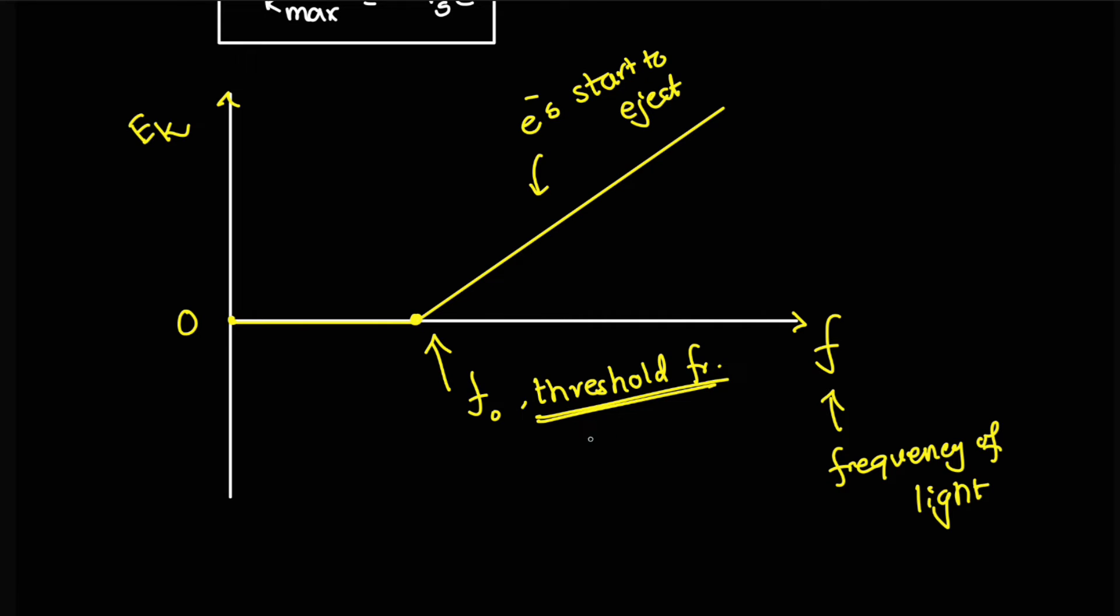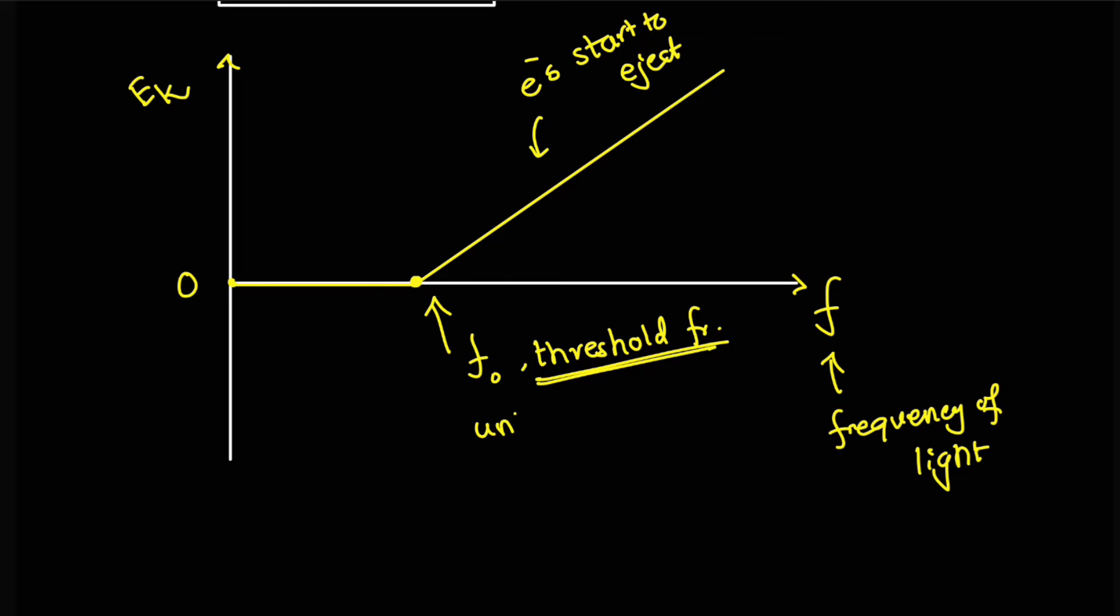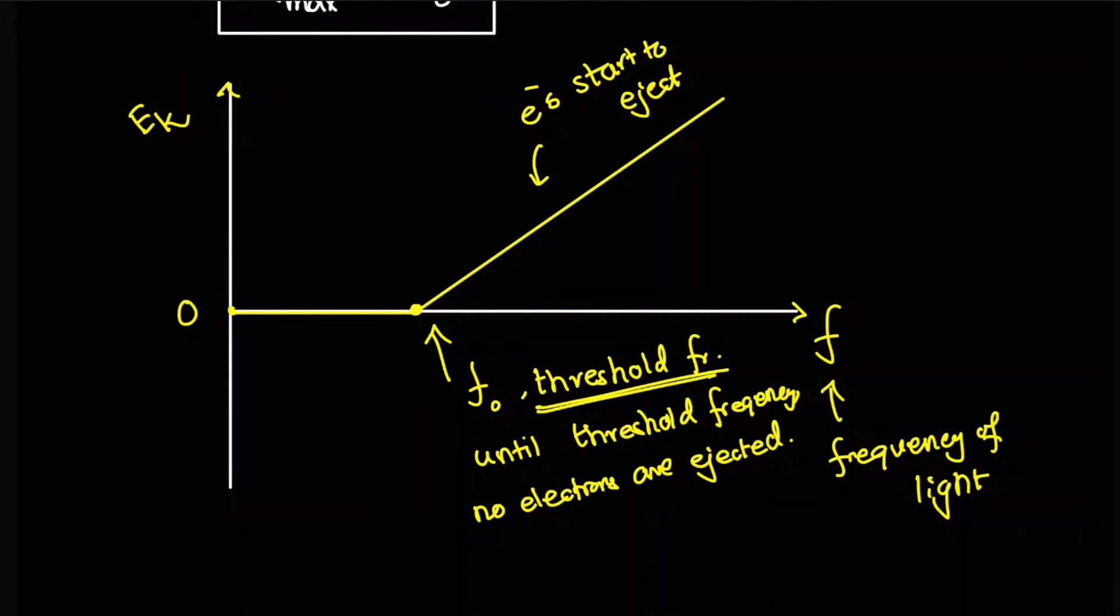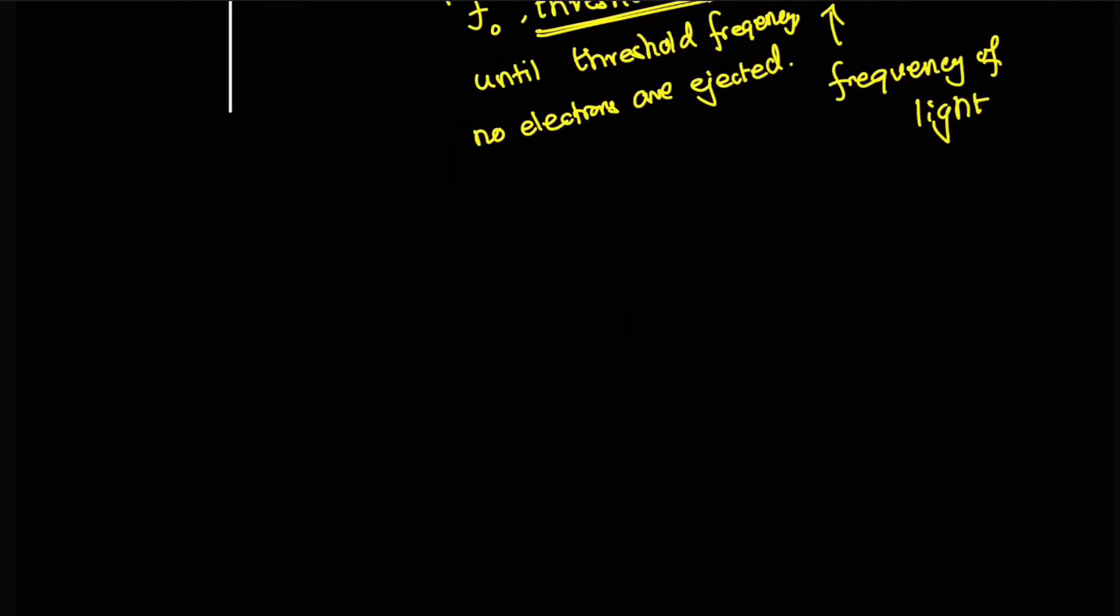What is the threshold frequency? This threshold frequency is that particular minimum value of F or the frequency of light until which no electrons are liberated. Until the threshold frequency, no electrons are ejected. This graph of ours looks like Y equals MX minus B. This can be expressed by the equation that E_K is equal to hf minus phi.